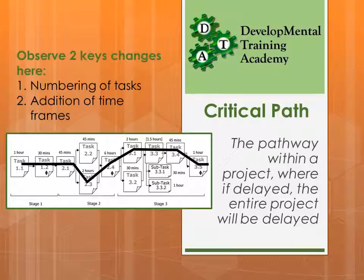There are two things different between a PERT chart and a critical path diagram. The first is that tasks have been numbered — each task has a number like 1.1, 1.2, 2.1, and we'll explain how to do that shortly. The second is that time frames have been added: 1 hour, 30 minutes, 45 minutes. There's a big black line across the middle, and that's what we call the critical path. Let's work through this process.